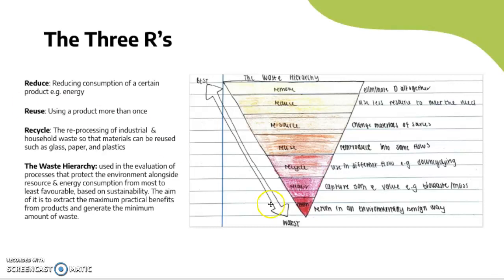This is a diagram of the waste hierarchy. The waste hierarchy is used in the evaluation of processes that protect the environment alongside resource and energy consumption, from most to least favorable based on sustainability. The aim is to extract the maximum practical benefits from products and generate the minimum amount of waste.